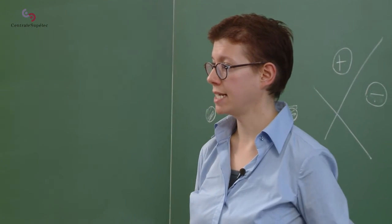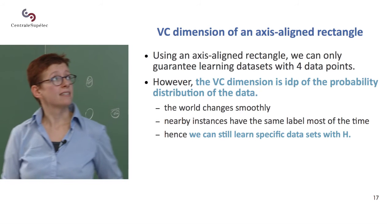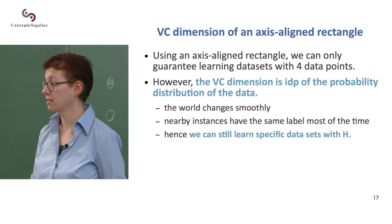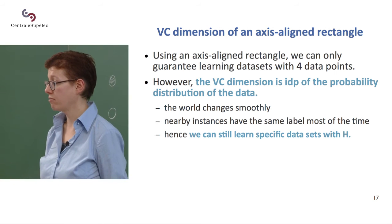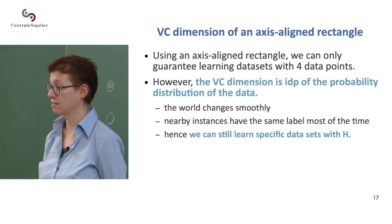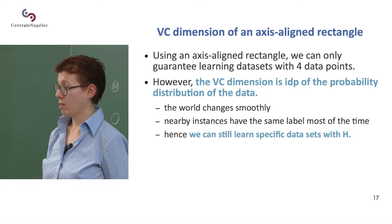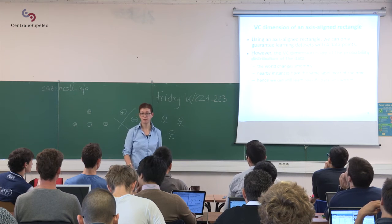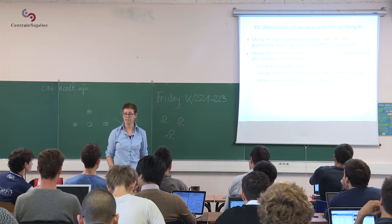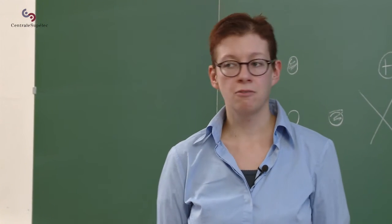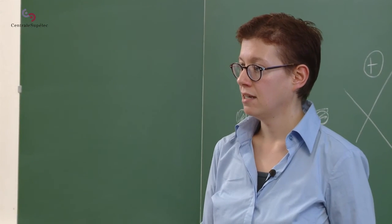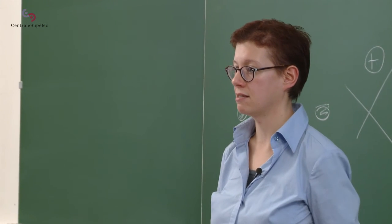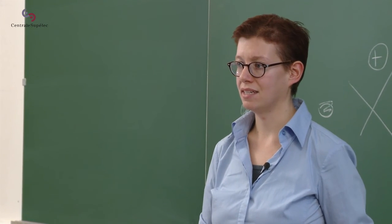So what does this tell us? Using an axis-aligned rectangle, we can only guarantee we're good at separating data sets with four points. If we have more than four points, we're not guaranteed. It sort of means that if we have more than four points, separating them with a rectangle is going to be tricky.